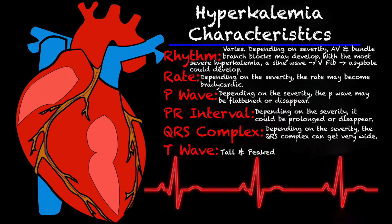When we are looking at more severe cases of hyperkalemia, the rate becomes bradycardic. Depending on the severity, your P wave can flatten out or it can disappear completely. The PR interval, depending on the severity, could be prolonged or it may disappear because the P wave disappears. Depending on the severity, the QRS complex can get extremely wide, especially once that P wave disappears — it can become very wide and ultimately turn into that sine wave.